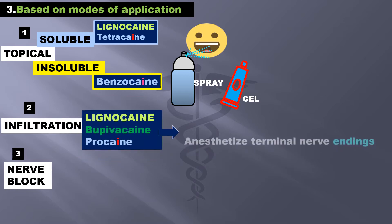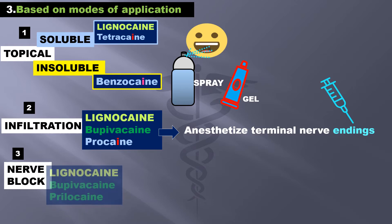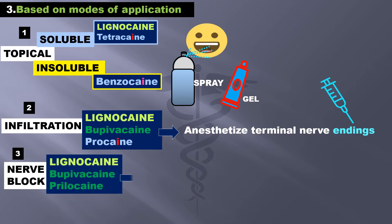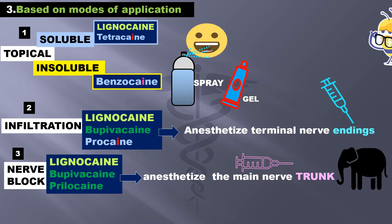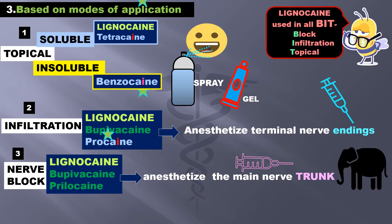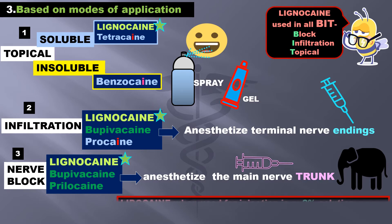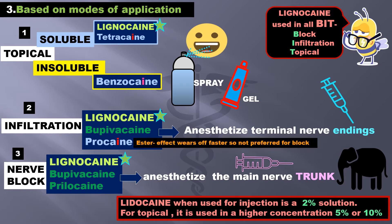Lignocaine, bupivacaine, and procaine are used for infiltration to anesthetize terminal nerve endings. Lignocaine and bupivacaine, along with prilocaine, are used as nerve blocks to anesthetize the main nerve trunk. Note that lignocaine can be used in all three — block, infiltration, and topical. When used for injection it is a 2% solution, and for topical use it is used in a higher concentration of 5% or 10%.